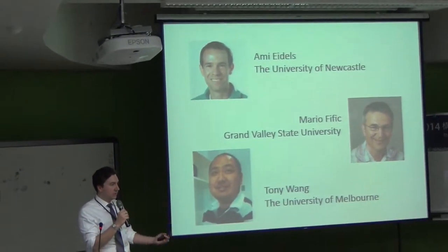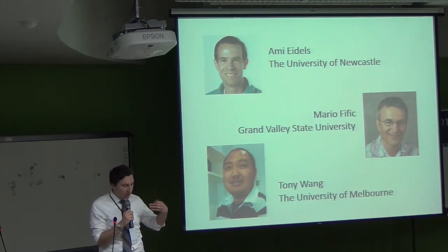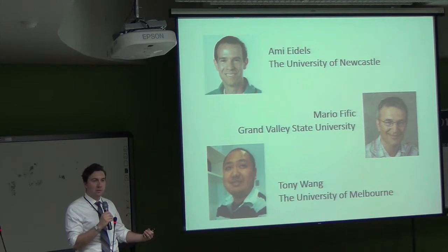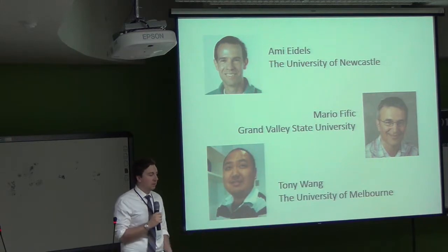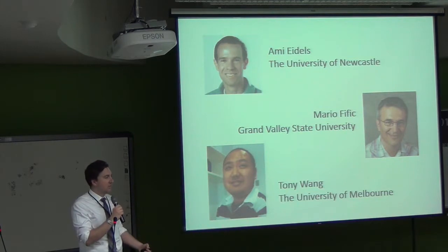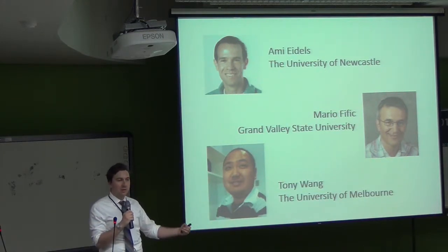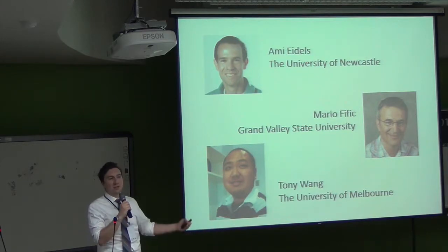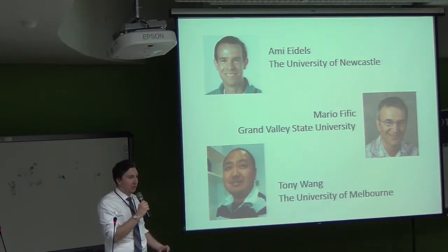There is another tool under the framework of systems factorial technology: capacity. The idea is whether the overall rate of processing slows down as you move from processing a single item to two or three items — does it remain unchanged (unlimited capacity), or does it even speed up? When we applied this measure to our results, it didn't work. Under certain assumptions, serial processing should give limited capacity and coactive models should give super capacity — but we found serial models with unlimited or super capacity, and coactivation with limited capacity.